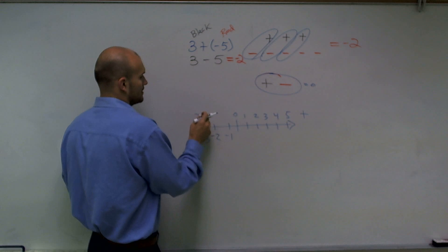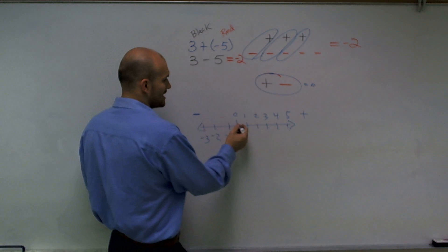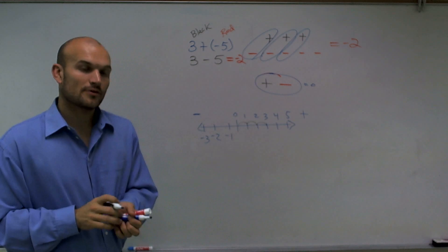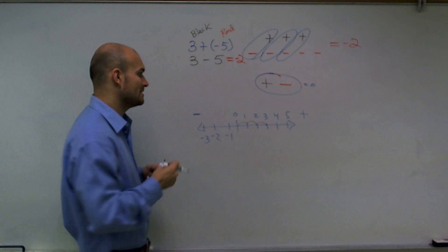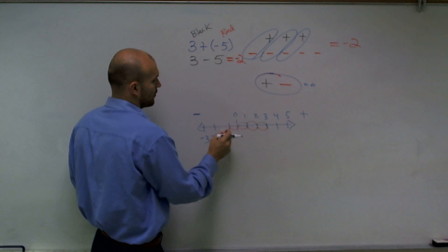So let's pretend you walk three units to the right in positive, 1, 2, 3. But then you walk five units to the left going negative. 1, 2, 3, 4, 5.